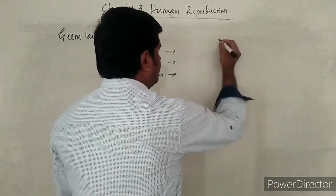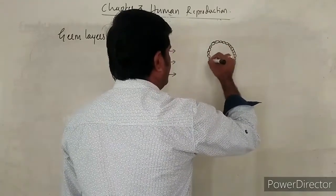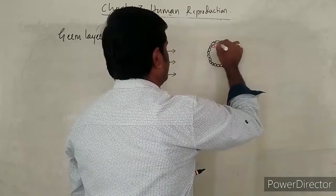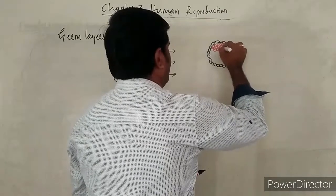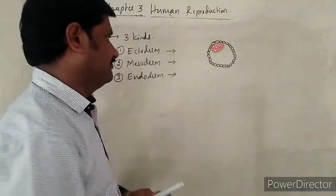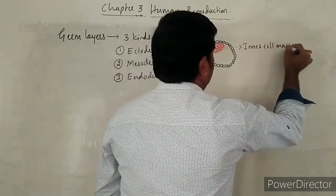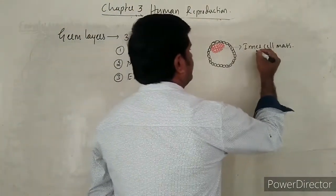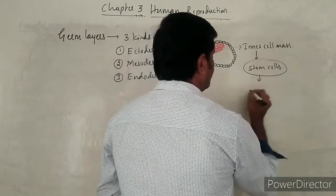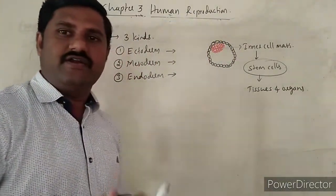How these germ layers are formed? The trophoblast as well as inner cell mass which is present in the blastocyst — this is the inner cell mass. After implantation, this blastocyst develops the placenta, and this inner cell mass is going to become the embryo in future. This inner cell mass has stem cells, and these stem cells are responsible for the formation of many tissues as well as organs.